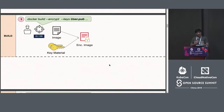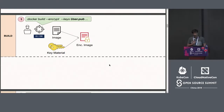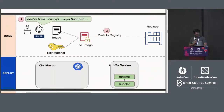With a Docker build command, you should be able to pass a public key. For example, if I want to create a container image that only Brandon should be able to run, I take his public key during the Docker build process, encrypt with it, and push that encrypted image to the registry. Once inside the registry, it gets interesting how you consume it within the context of Kubernetes.